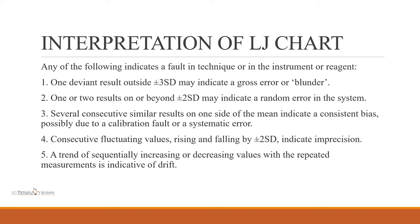To interpret LJ charts: if one value lies outside plus or minus 3 SD, it indicates a gross error or blunder. If one or two samples lie beyond plus or minus 2 SD, it may indicate random error and they are left as such. If several consecutive similar results lie on one side, they indicate a consistent bias, possibly due to calibration problems or systematic error. Consecutive fluctuating values rising and falling by plus or minus 2 SD indicate imprecision. A trend of sequentially increasing or decreasing values indicates drift.